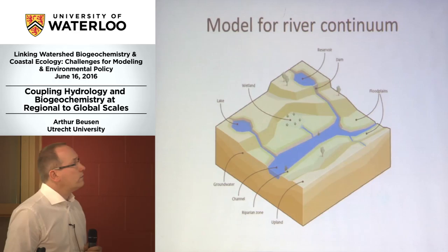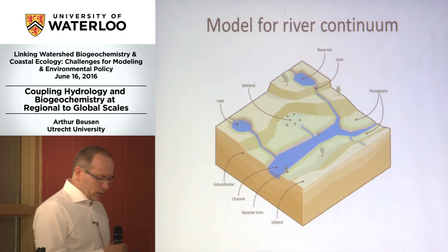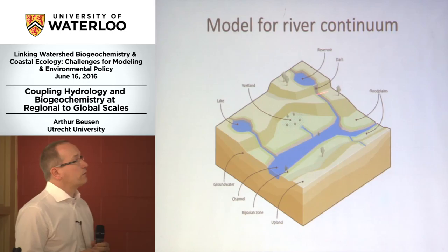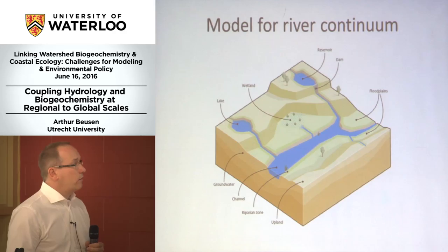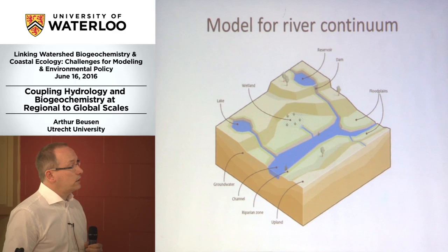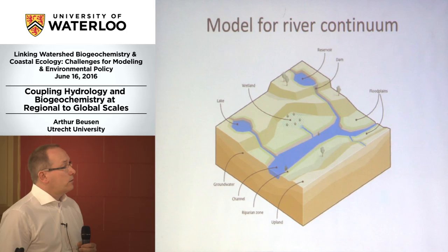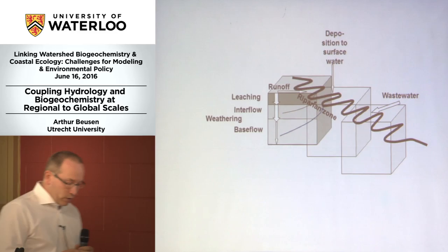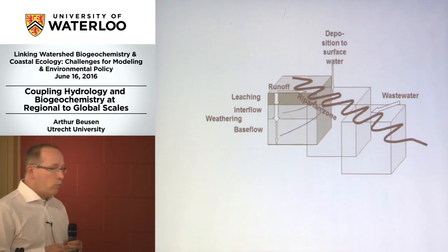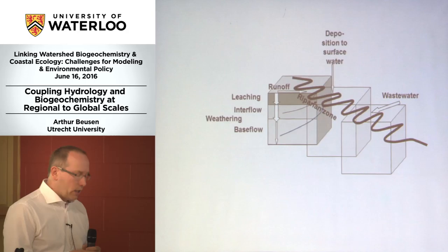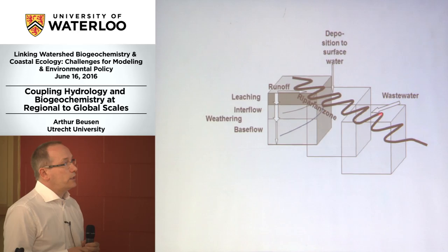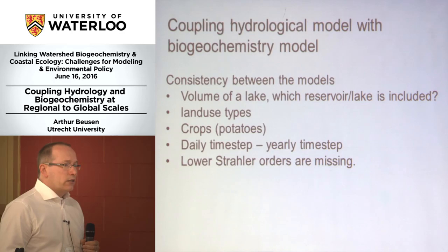Last, I want to tell something about the spiraling ecological concept. When talking to the hydrological model, each grid cell has all kinds of water bodies in it: a reservoir or dam, floodplains, a wetland, lakes, groundwater, a channel which every cell has, a riparian zone, and an upland area. Those cells are connected by a river. The groundwater stays within the cell, and finally the water ends up in the river and is transported to the next cell. On the river there is also deposition and wastewater.